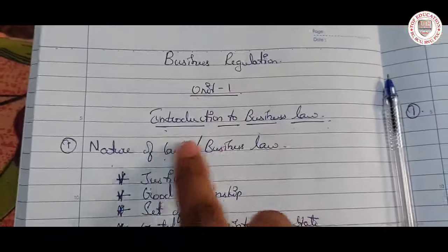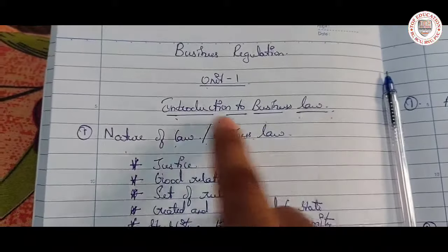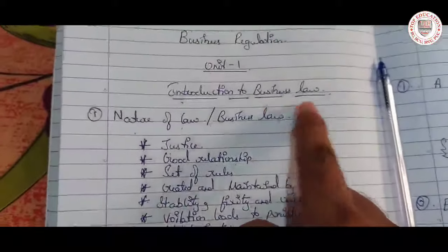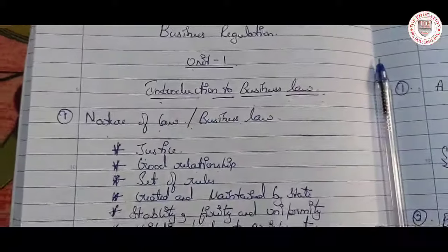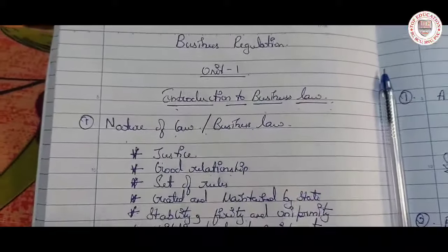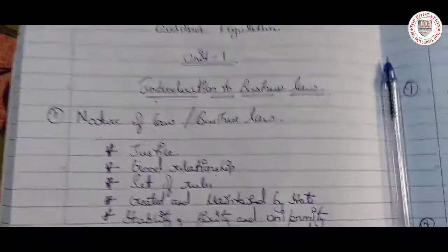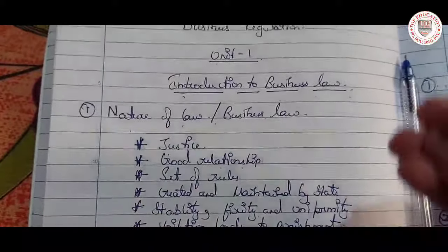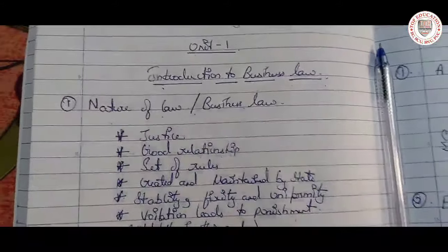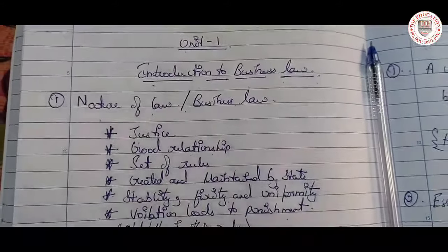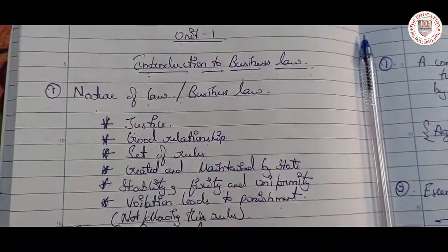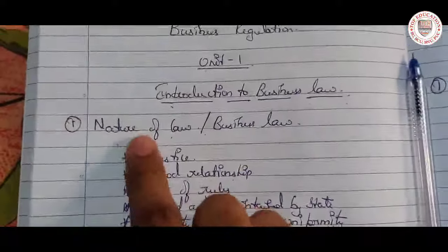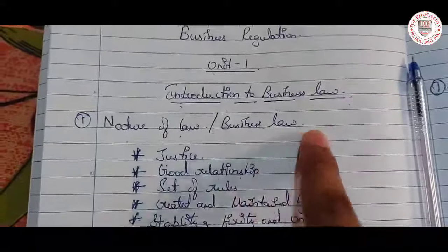Unit One: Introduction to Business Law. What do you mean by business law? Business law consists of certain rules, certain regulations, and certain conditions which are followed by each and every business person.